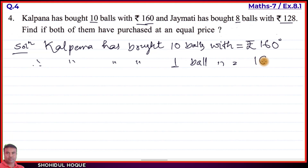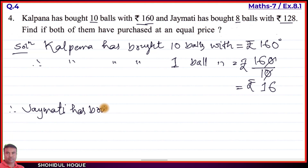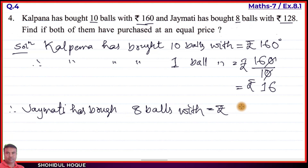So Kolpona bought one ball for rupees 16. Now for Jhoi Moti: she bought 8 balls with rupees 128. Using the unitary method, the price of one ball equals 128 divided by 8.